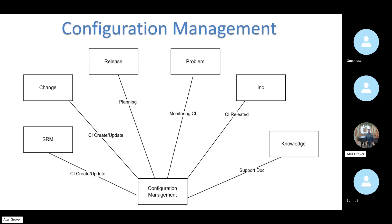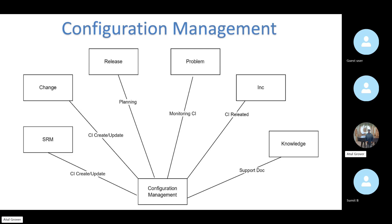If you go to the ServiceNow asset table, the asset form has contracts, entitlements, cost, invoice number, depreciation, end of life, and resale value — those are put at the asset level. The car standing in my parking is my asset, but that car also works as a CI for me because it helps me get from one place to another. That is the difference between CI and asset.